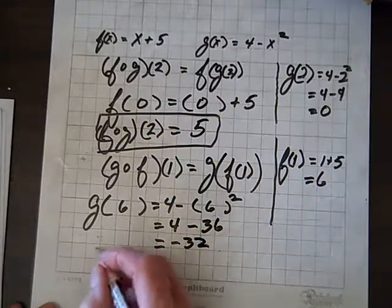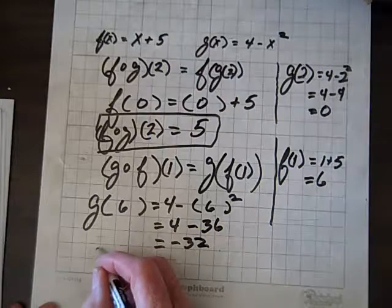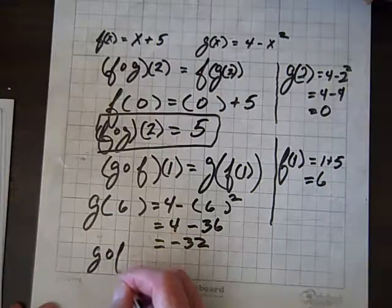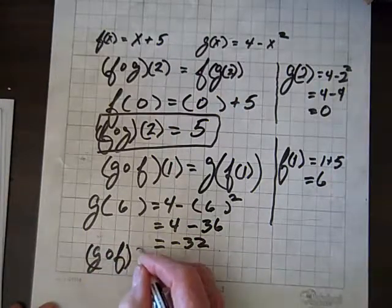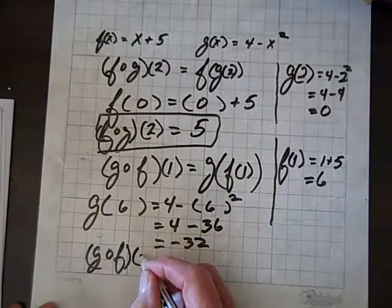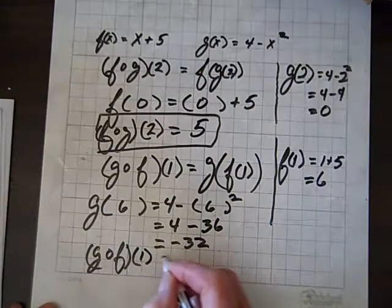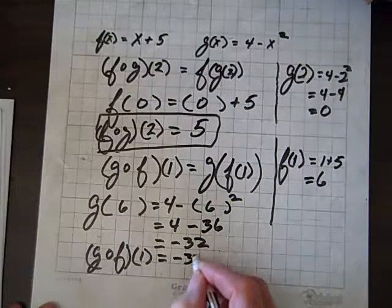and that equals negative 32. So, therefore, g of f of 1 equals negative 32.